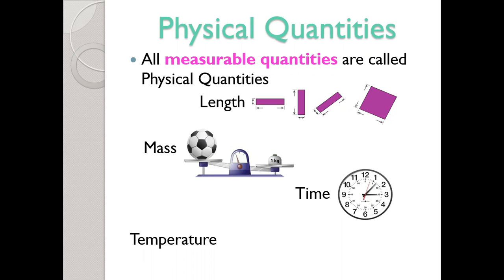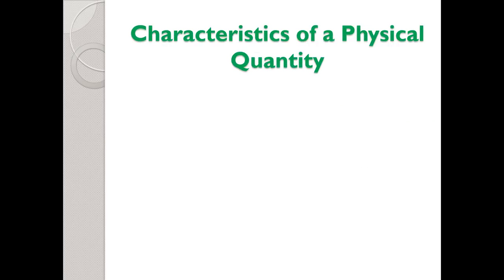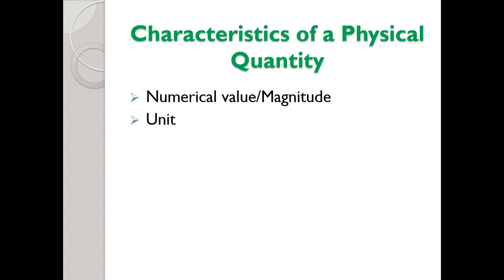Next, we are going to discuss the characteristics of a physical quantity. Any physical quantity has two characteristics: the first one is numerical value or magnitude, and the second one is the unit in which it is measured.